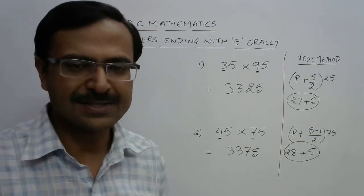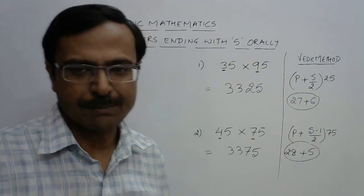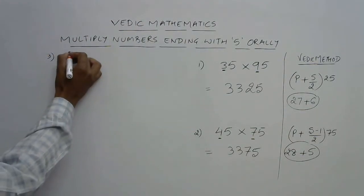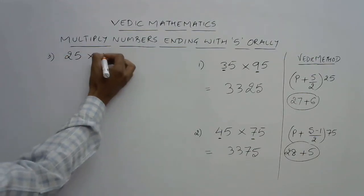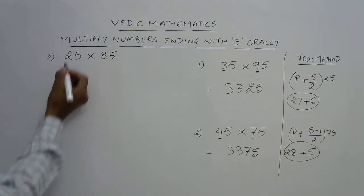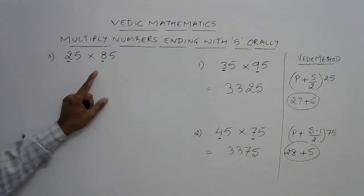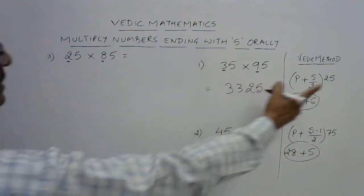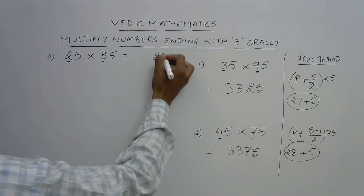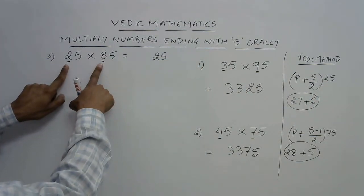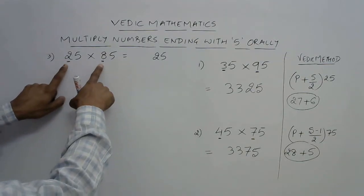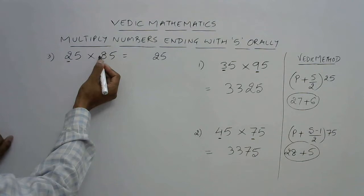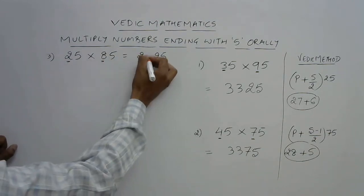Let's practice the method by taking some more examples. Now this is question number 3. Let's have 25 and 85. Now see, 2 + 8 = 10, which is even, so this is a first category question. The answer will end with 25. The product is 16, so we need to add something to this: 16 plus half of the sum, half of the sum is 10 ÷ 2 = 5. So 16 + 5 = 21. So 2125 is the product.